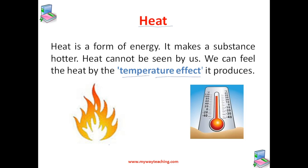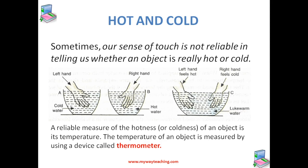So when we increase the temperature it will become hot, and if we remove the heat it will become cold. In our daily life we come across a number of objects — we say some are hot and some are cold. For example, tea is hot but ice is cold. We say tea is hot and ice is cold. We can't say ice is hot.